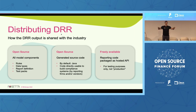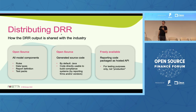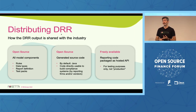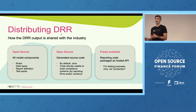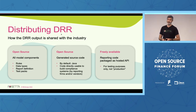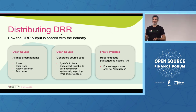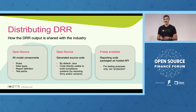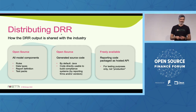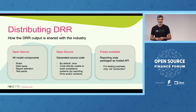On distributing DRR — again, open source at heart and open source in its output. The first part of the output that is open source includes all the model components: rules, data types, report definitions, and also the test packs — extremely important. Also open source is all the generated source code, by default generated into Java, directly usable to build compliance systems by end users — financial institutions, reporting firms — or by vendors in the regulatory reporting space. Not open source but freely available are hosted APIs provided for testing purposes, allowing someone to send data and get a report back within minutes, though not intended for production due to latency constraints.